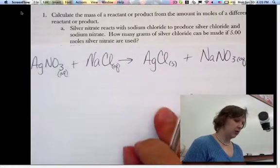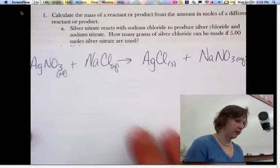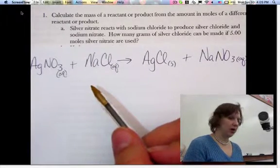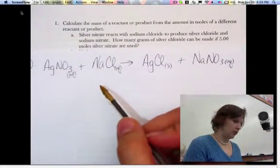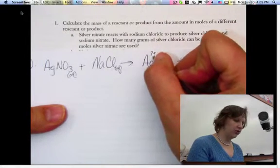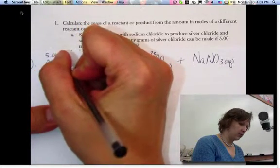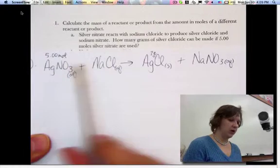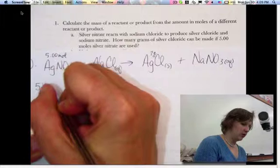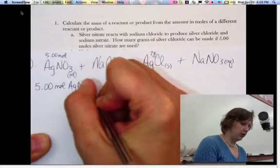Let's look at the problem. What I like to do is write the givens and the find up above the balanced equation. This says how many grams of silver chloride, so I'm going to put question mark and G for grams, if 5 moles of silver nitrate are used. So I know this is my given, and this is my find. So you always start with given over 1. So 5.00 moles AgNO3 over 1.